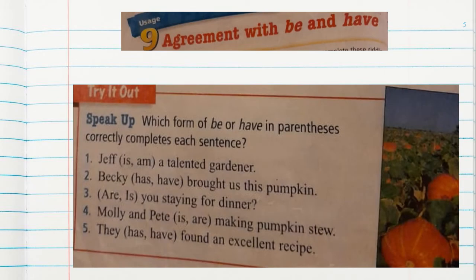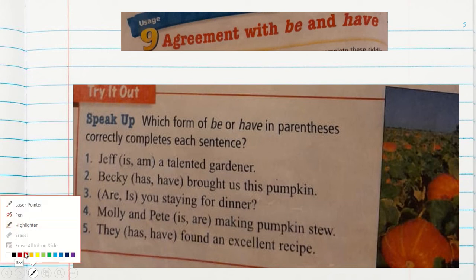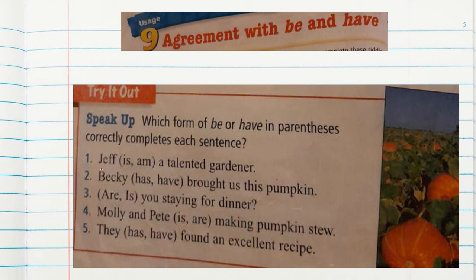This chart must be in your notebook to complete the next activity. It says: which form of be or have correctly completes each sentence? Remember, always look at the subject. We're going to underline the subject in red. Number one, the subject is Jeff. Jeff is singular. Jeff is a talented gardener. The clue to this activity is to identify the subject and to identify if it is singular or plural.